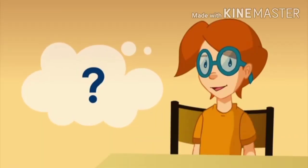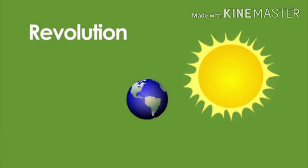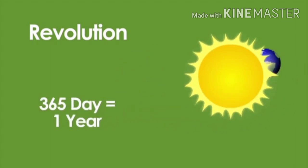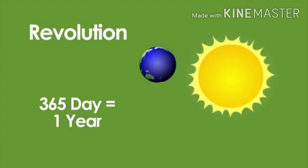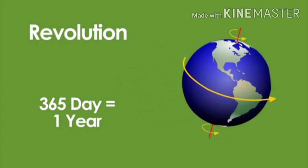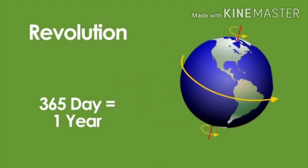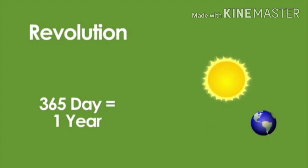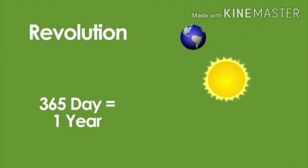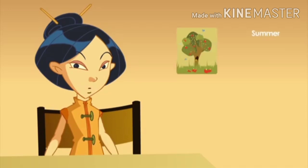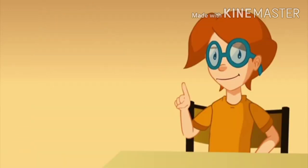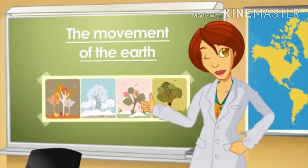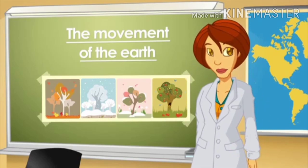What about revolution? Revolution is the movement of the Earth around the sun in its orbit. It takes the Earth a whole year to complete this movement. While the Earth revolves around the sun, it changes its tilt, so during some months the northern hemisphere receives more energy from the sun than the southern. This variation in climate results in the different seasons of the year: summer, autumn, winter, and spring.